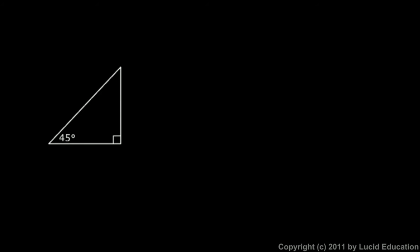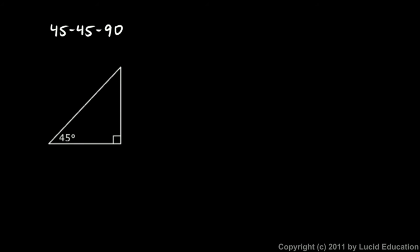Let's look at some tangent ratios for particular angles, starting with the 45-45-90 triangle. This is a right triangle — the 90 refers to the right angle — and it also has two 45-degree angles. Only one is marked, but since all three angles must add up to 180, if this one is 90 then the other two add up to 90, so if one is 45 the other must also be 45.